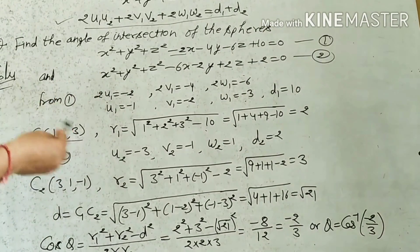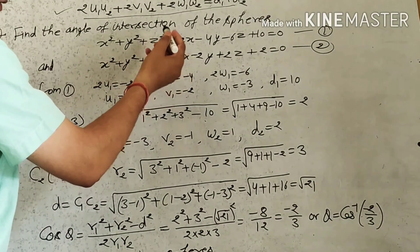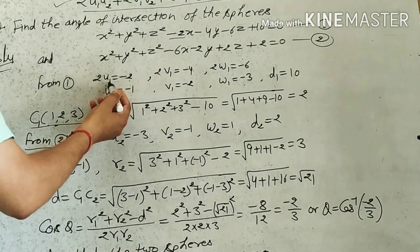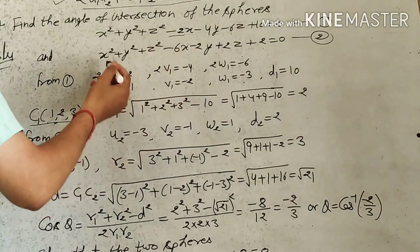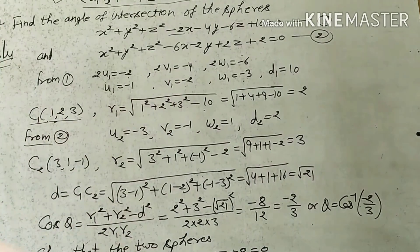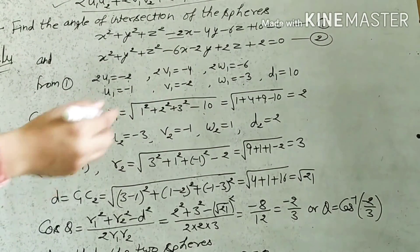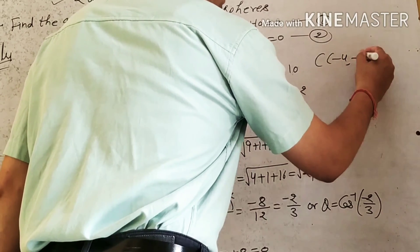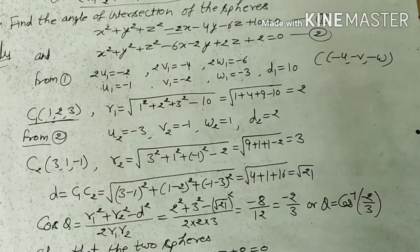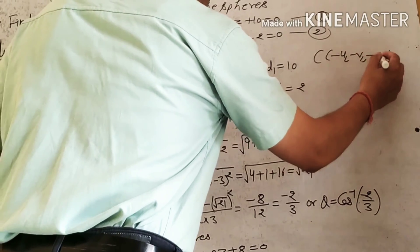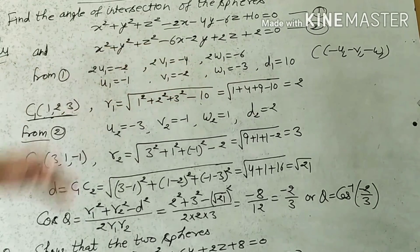From the 1st sphere, comparing with the standard equation, we get: 2U1 = −2 so U1 = −1; 2V1 = −4 so V1 = −2; 2W1 = −6 so W1 = −3; and D1 = 10. The coordinate of the center of the 1st sphere is (−U1, −V1, −W1), so the signs change and the center C1 = (1, 2, 3), with D1 = 10.